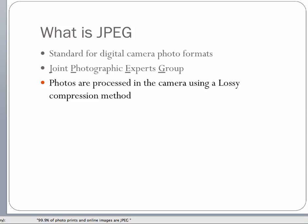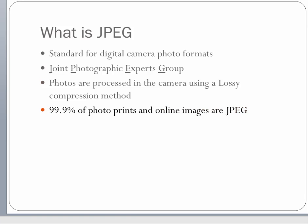Photos are processed in the camera using a JPEG format and they end up having what's called lossy compression. Lossy compression simply means that the camera takes the photo, processes the image and the light that comes into the camera, and creates a photograph. In doing so, it compresses the photograph — compressing means it makes it smaller. 99.9% of all photo prints and online images that you see are JPEG.